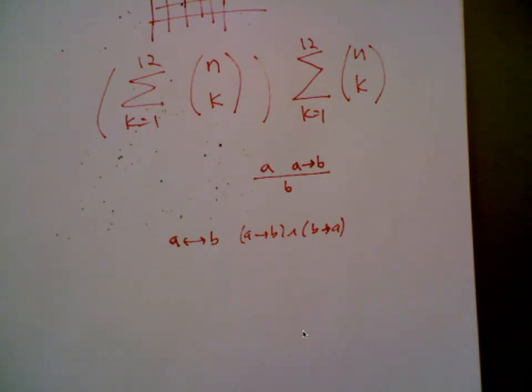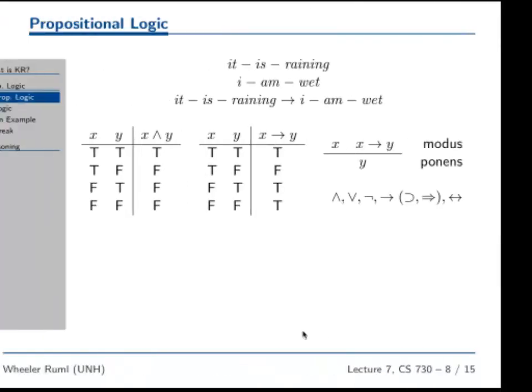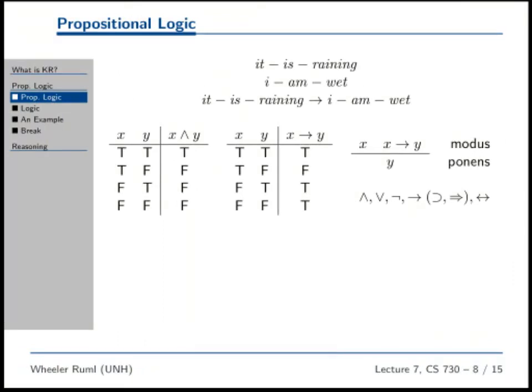And these are truth tables where you write down the different variables and then you write down, like, this is the definition of 'and': under what conditions this conjunction is true as a function of its inputs.